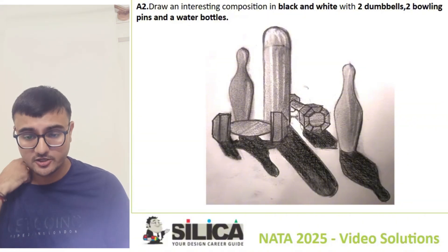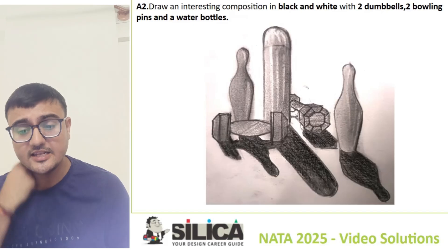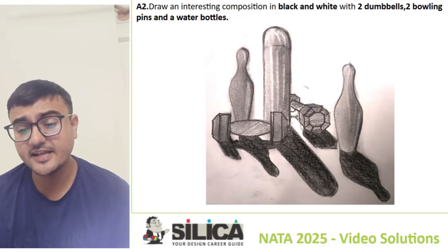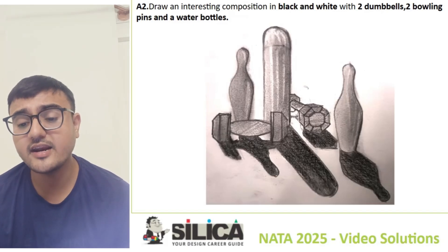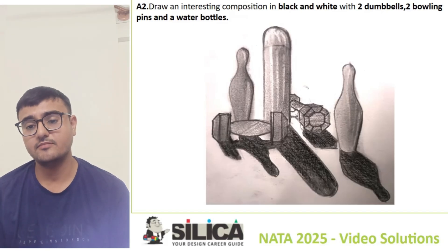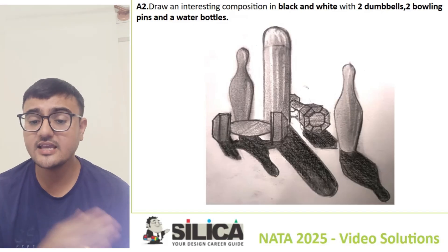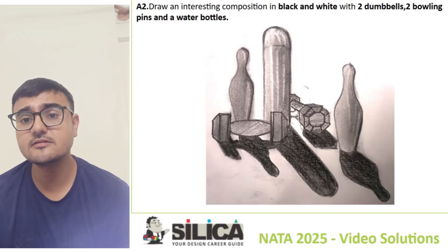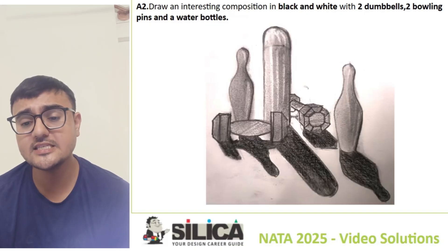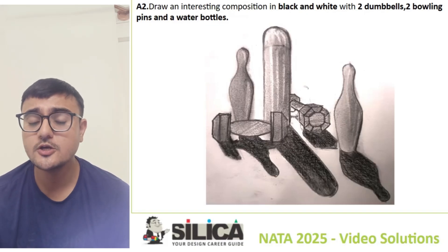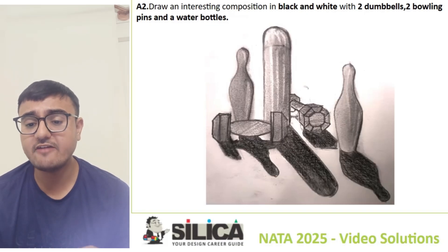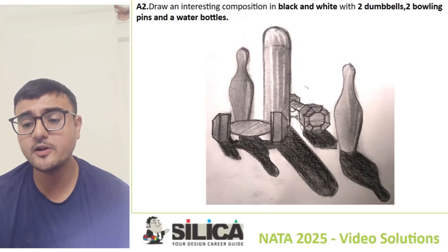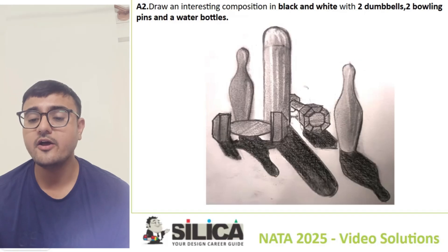You can see the texture, the material rendering in the composition. The light source is on the left side, so the shadow will be reflected on the right side.